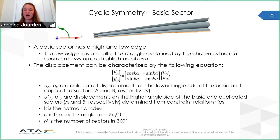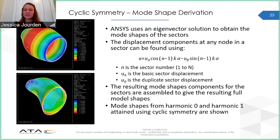For a cyclic symmetry analysis, a basic sector of your geometry must first be selected. The sector angle can be any size, as long as it encompasses a repeating sector and the number of sectors times the sector angle equals 360. For the nozzle, a 3.6-degree slice containing one and two halves tubes was chosen, so there are 100 sectors. One and two halves tubes were chosen rather than one or two tubes so that the brazed area between the tubes would also be included. The cyclic symmetric analysis was done using ANSYS, which uses an eigenvector solution to get the mode shapes of the sectors. Those sector shapes are then combined to give the shape of the full model. The harmonic zero breathing mode and the harmonic one bending mode for the cyclic symmetry nozzle are shown here.